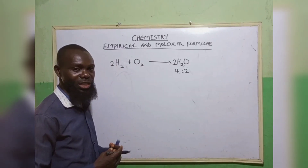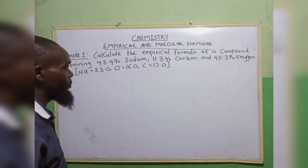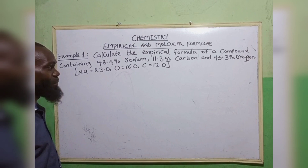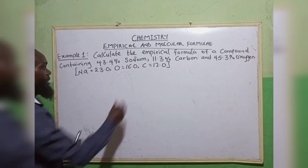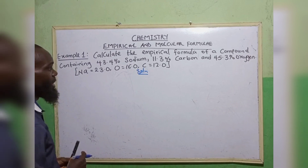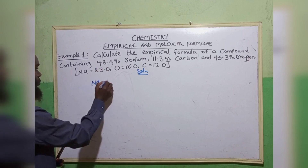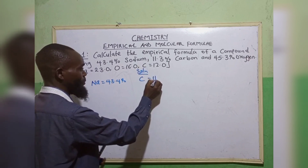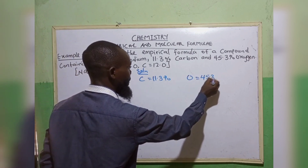Now, let's look at the way of calculating the empirical and molecular formulae. Example 1: calculate the empirical formulae of a compound containing 43.4% sodium, 11.3% carbon, and 45.3% oxygen. Once we find the way of calculating the empirical formulae of a compound, we list our elements with their percentages. We have sodium Na at 43.4%, then carbon at 11.3%, then oxygen at 45.3%.